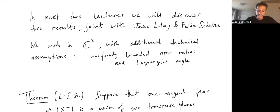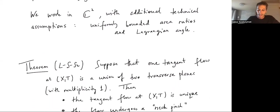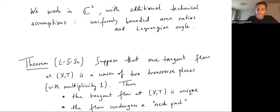In the next two lectures, we'll be discussing basically two results. Both of these are joint work with Jason Lotte and Felix Schulze. There are some technical assumptions. We need uniformly bounded area ratios, bounded Lagrangian angle. We also need at least rational or exactness, which I won't really spend much time on. For example, if you have simply connected flows, if you're flowing simply connected surfaces, then the exactness is automatic.